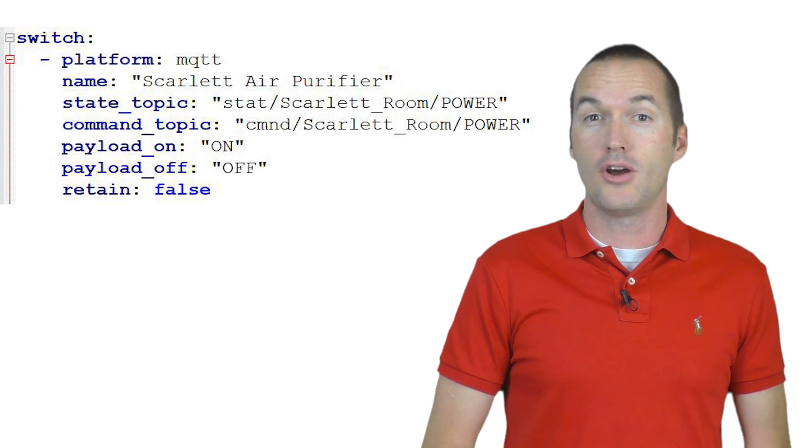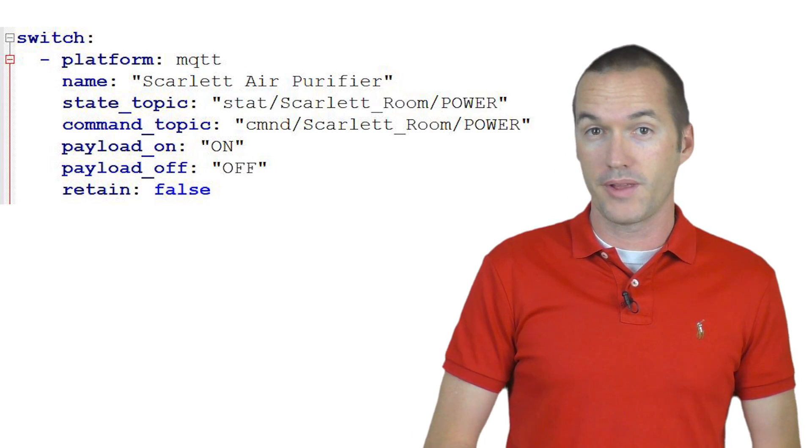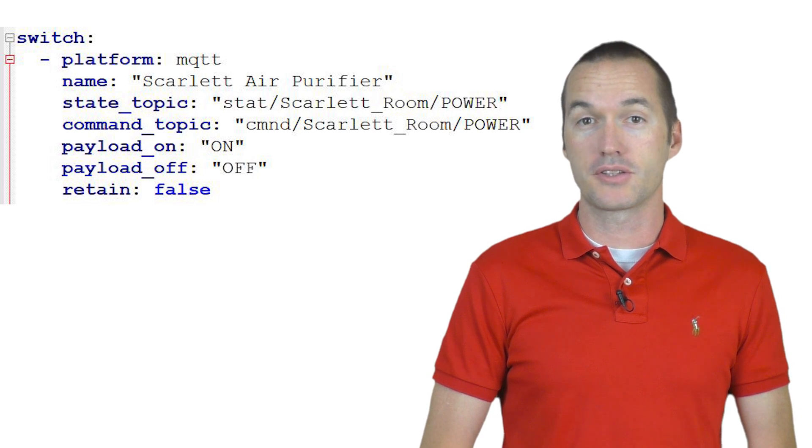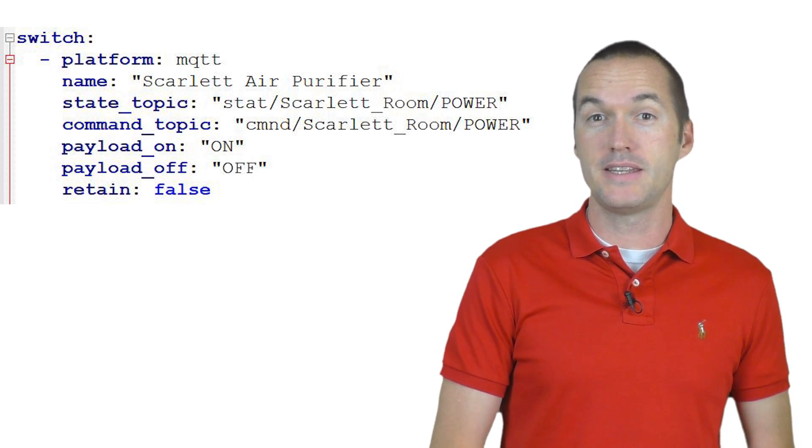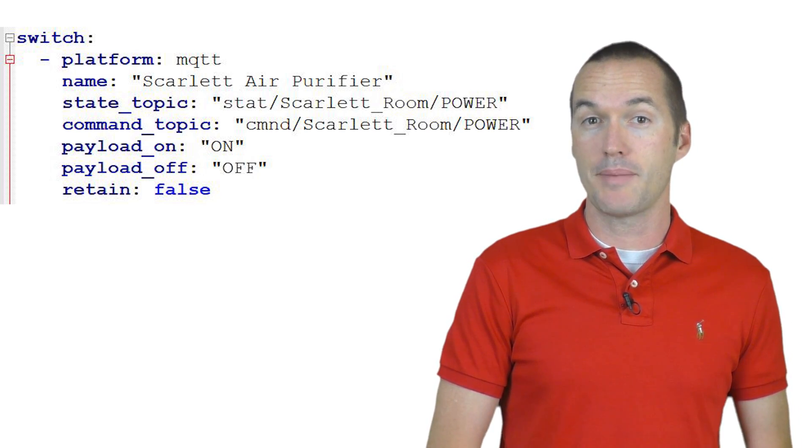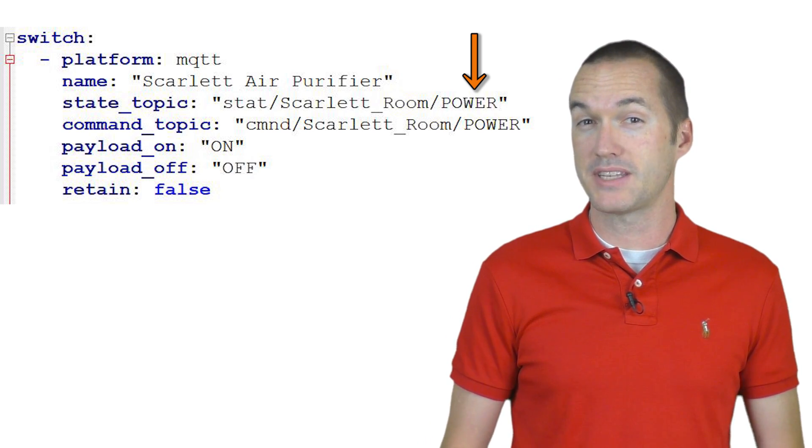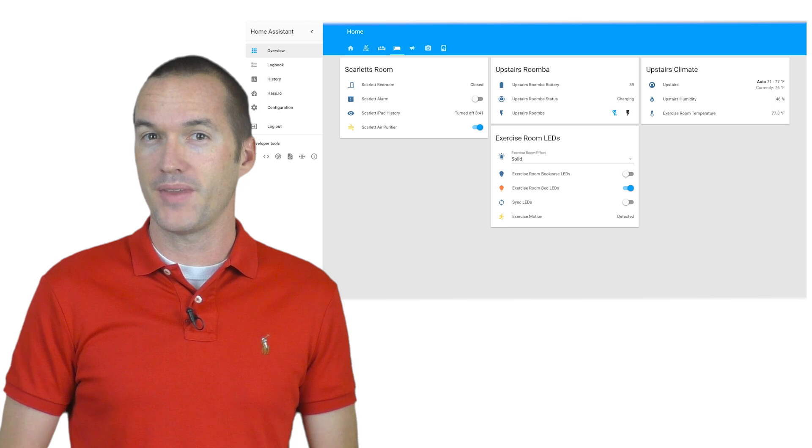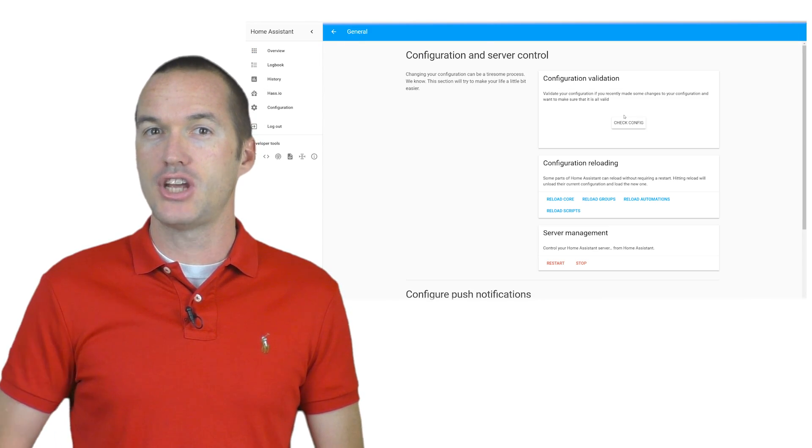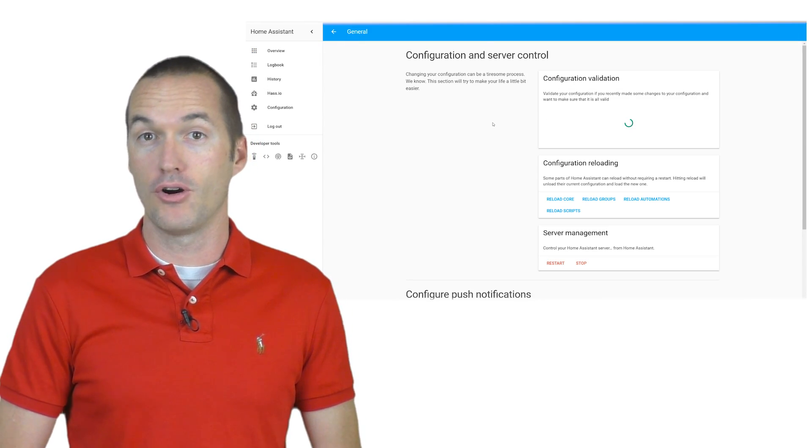You can also set up a switch in Home Assistant for whatever you're controlling. This is what that configuration looks like. You'll notice that the main difference here is that the state topic and the command topic are just power instead of power2 because we set up our switch as switch 2. At this point, you can save, check your config, and then restart Home Assistant.